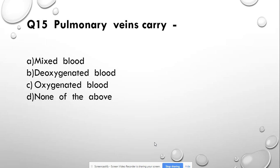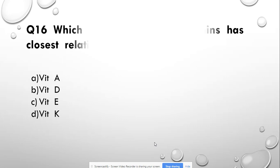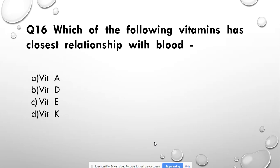Question number 15: The pulmonary veins carry — mixed blood, deoxygenated blood, oxygenated blood, or none of the above. Answer: oxygenated blood. Question number 16: Which of the following vitamins has the closest relationship with blood? Options: vitamin A, vitamin D, vitamin E, or vitamin K. Answer: vitamin K.